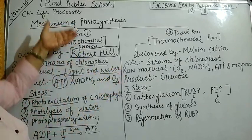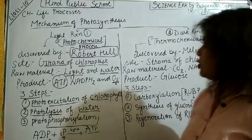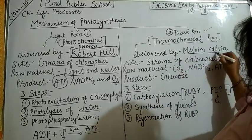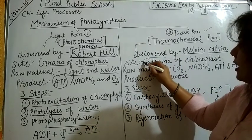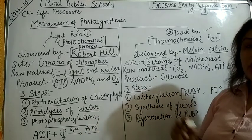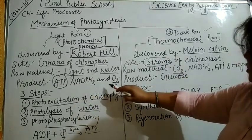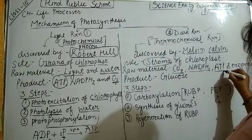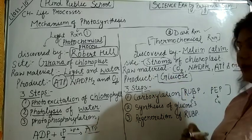Now we move to our second step. The light reaction process happens during the daytime, but besides daytime, the process of photosynthesis also happens at night time. The second step is dark reaction. Dark reaction's other name is thermochemical reaction. This process was discovered by Melvin Calvin, and this process takes place in the stroma of chloroplast. The raw materials required for dark reaction are: carbon dioxide, NADPH2, ATP, and certain enzymes. Combining all of these, the final product of dark reaction is glucose — the food of the plant.